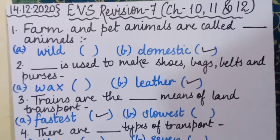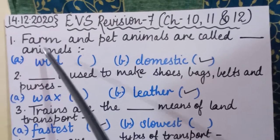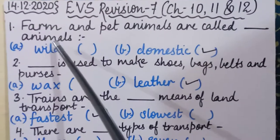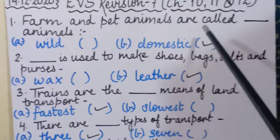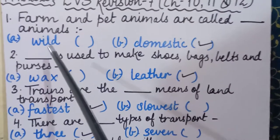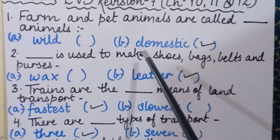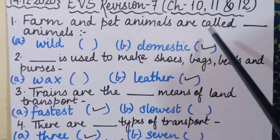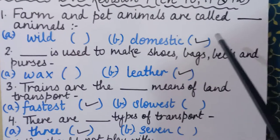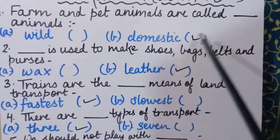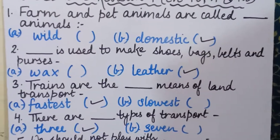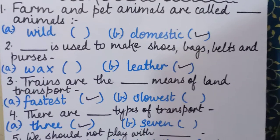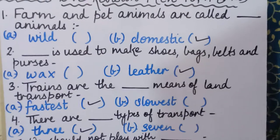The first question: 'Farm and pet animals are called ___ animals.' The two options are: (1) wild, (2) domestic. Farm and pet animals are called domestic animals, so we will put a tick in front of 'domestic.'